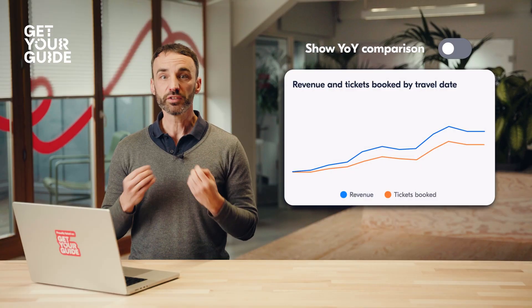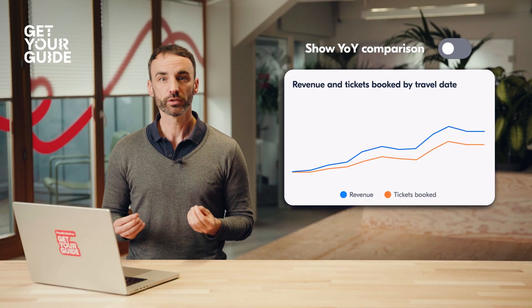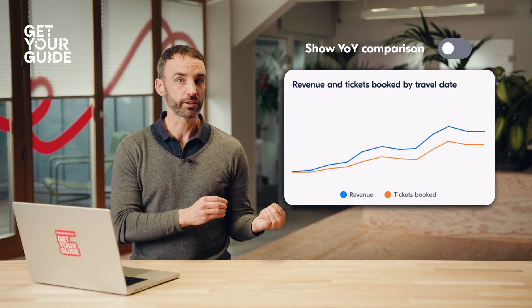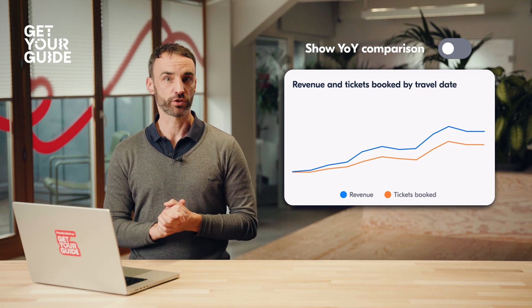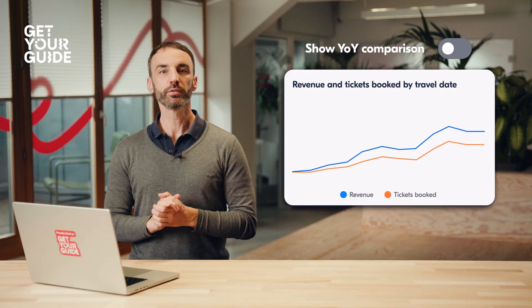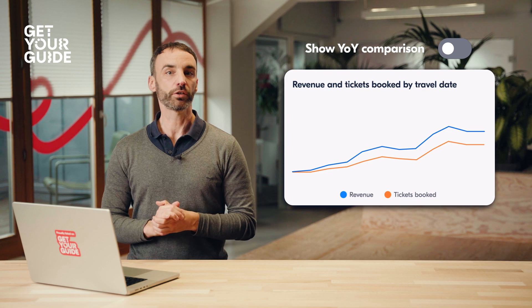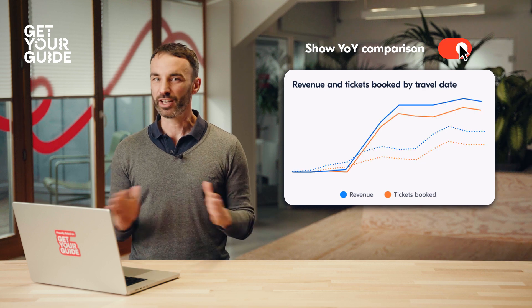Let's take another example and say you want to know how this week's bookings compare to last year, so you better understand the change. In the new analytics dashboard, this is simple — simply use the year-on-year toggle switch and you're done.